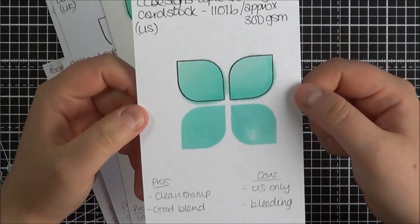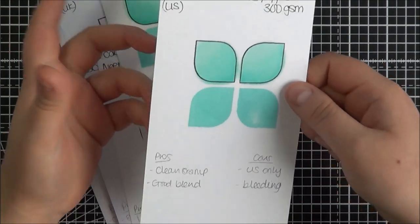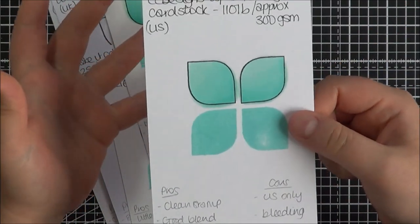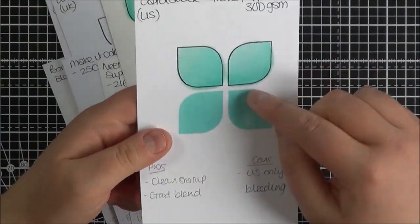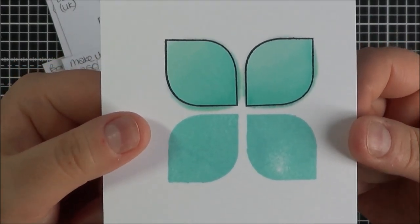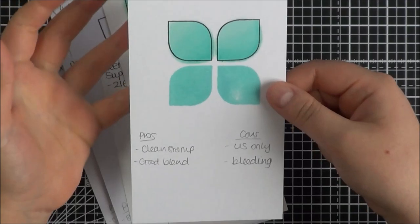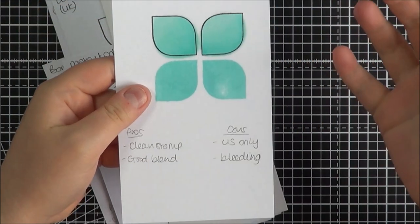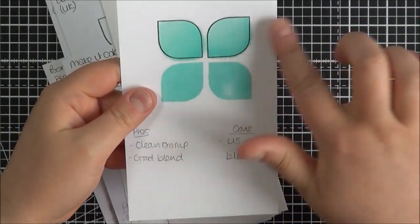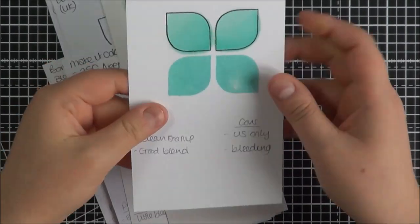I then got the CC Designs Copic Quality Cardstock which is 110 pounds which is around 300gsm. This obviously you can only get in the US. Apparently it's supposed to be Copic quality. The blending on this is very good but the bleeding absolutely terrible. I mean yeah I'm not quite sure. I know that other people do have good results with this. I don't know if it's because I blended a lot or I'm not quite sure but otherwise it is a nice cardstock. It's very thick.